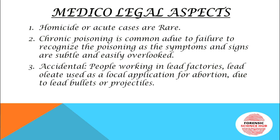Medico-legal aspects: homicide by acute poisoning is rare. Chronic poisoning is common due to failure to recognize it, as symptoms and signs are very subtle and easily overlooked. Accidental poisoning can occur in people working in lead factories who are exposed over a long time. Lead oleate is used as a local application for abortion. Lead bullets or projectiles left in the body can also lead to chronic lead poisoning.